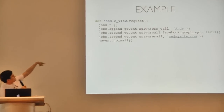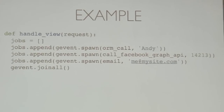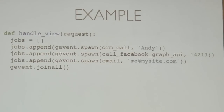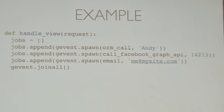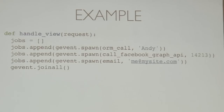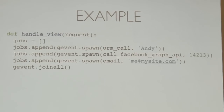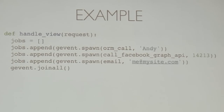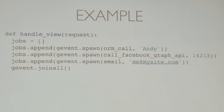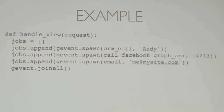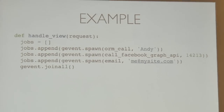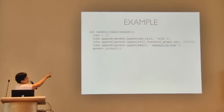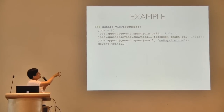Using gevent.joinall with a jobs list, these three tasks will be executed concurrently. Whichever IO blocks, it will switch to the next one automatically and give back a result much faster than executing them sequentially without gEvent. Of course, you can make each call without the wrappers — if you don't, chances are it's going to be slower.